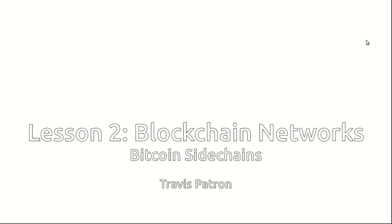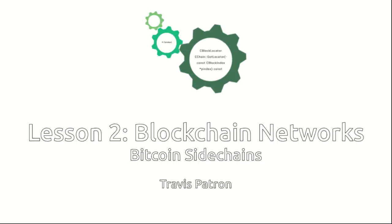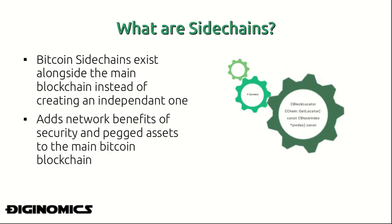This is lesson two: Bitcoin sidechains. In this lesson we'll be taking a look at the technological innovation of sidechains, something which is essentially a blockchain which integrates with the main Bitcoin network. Side chains can be understood as blockchains which integrate and exist alongside the main Bitcoin network, instead of creating an independent standalone blockchain. Alternative cryptocurrencies today use a standalone independent blockchain, and because of this they miss out on the network benefits of the already established security of the Bitcoin network through its hashing power, and also the pegged assets that could be exchanged between networks. Sidechains promise an innovation where additional applications can be built into the Bitcoin technology.